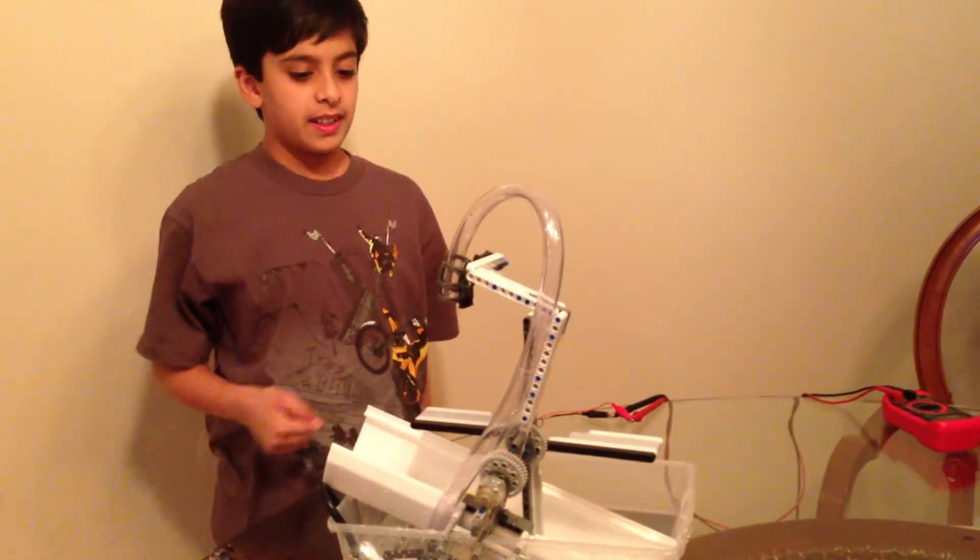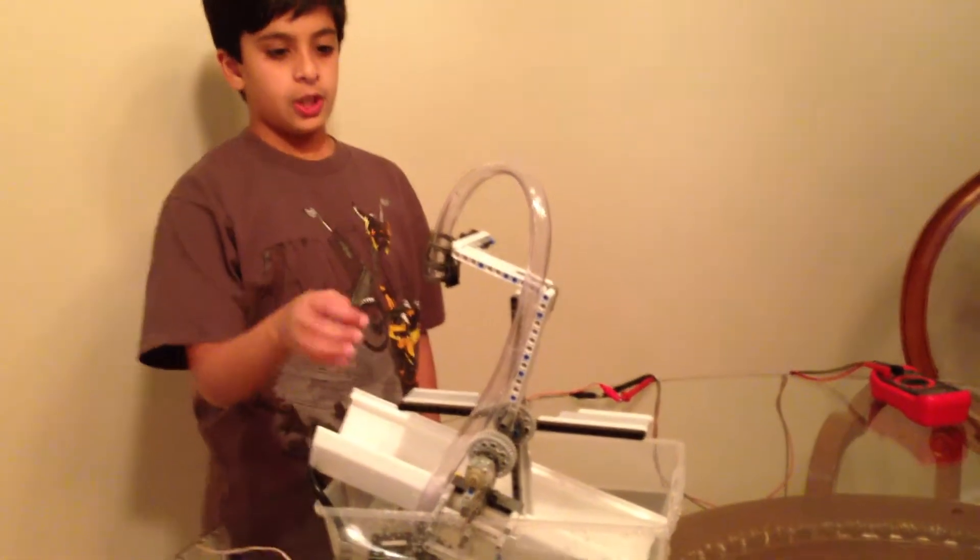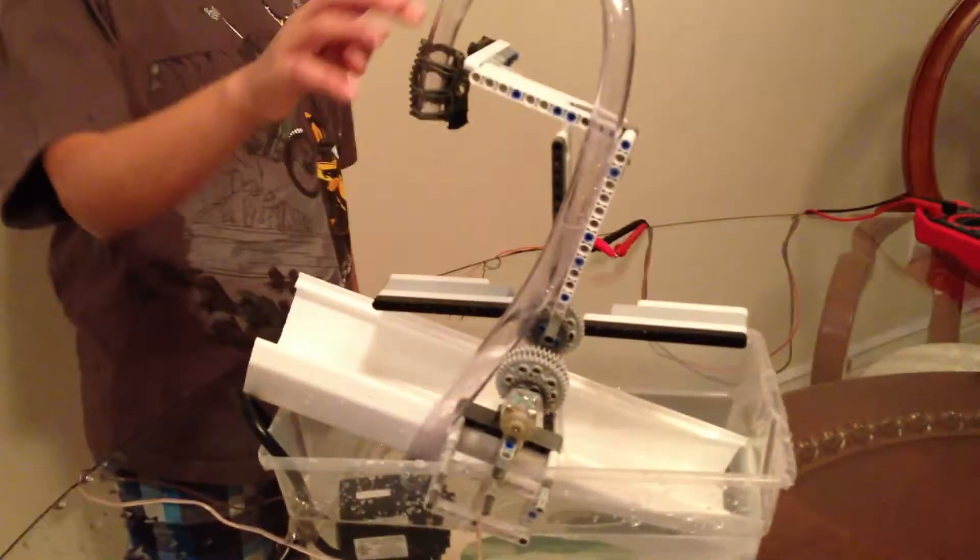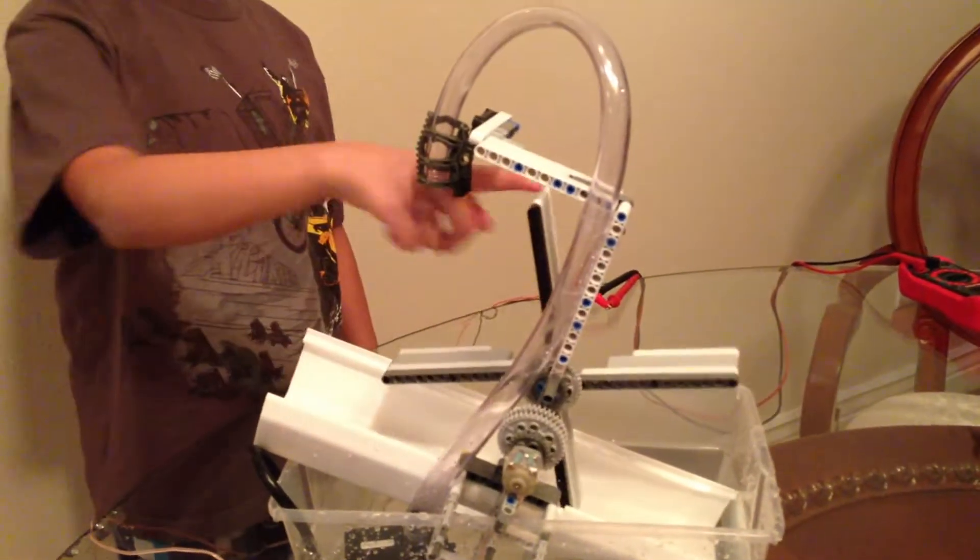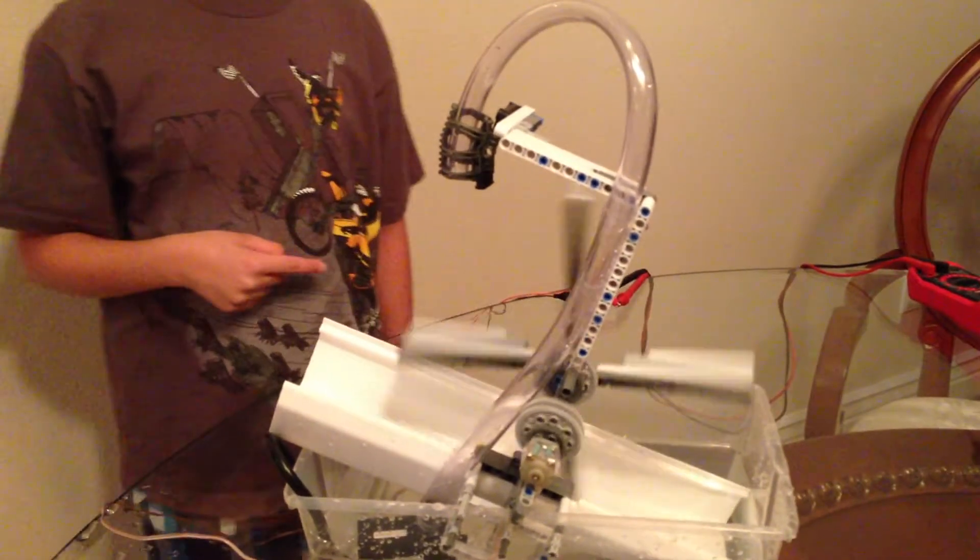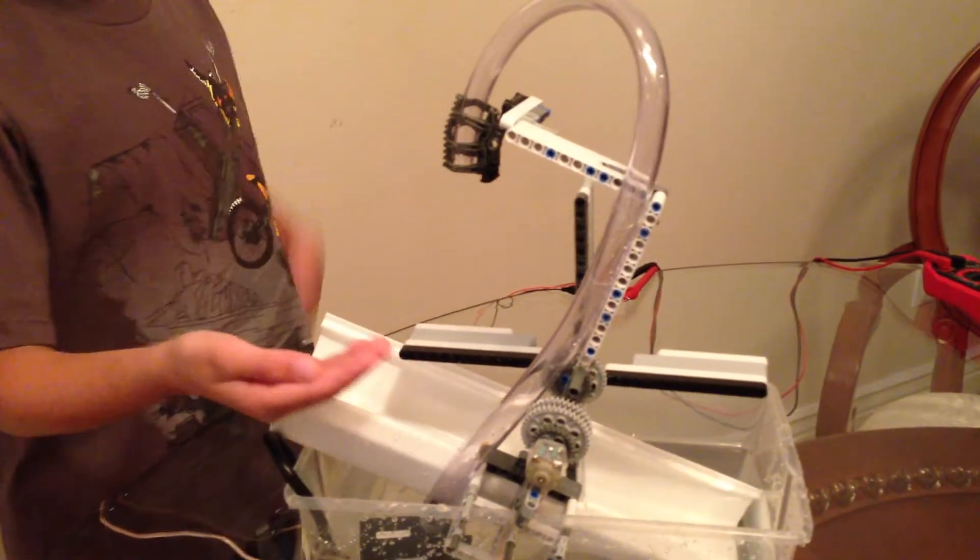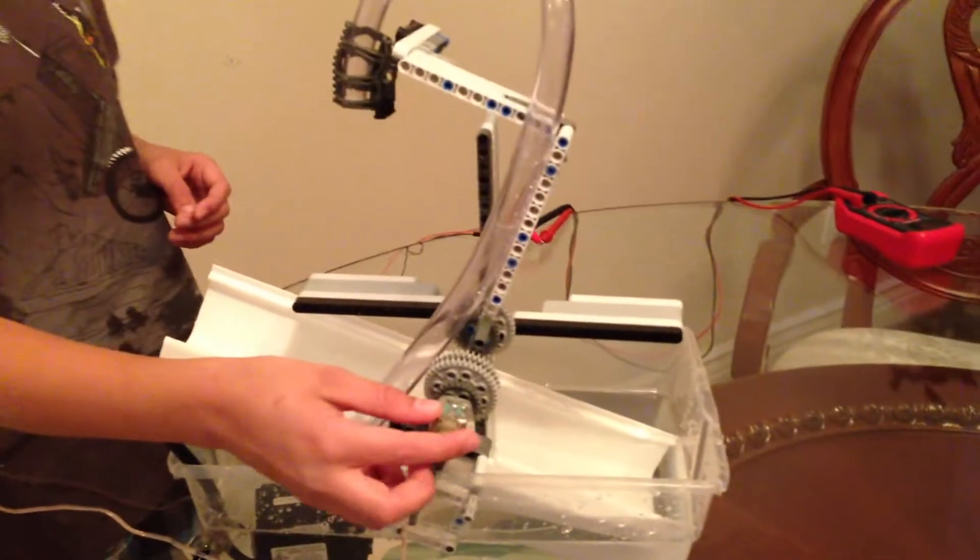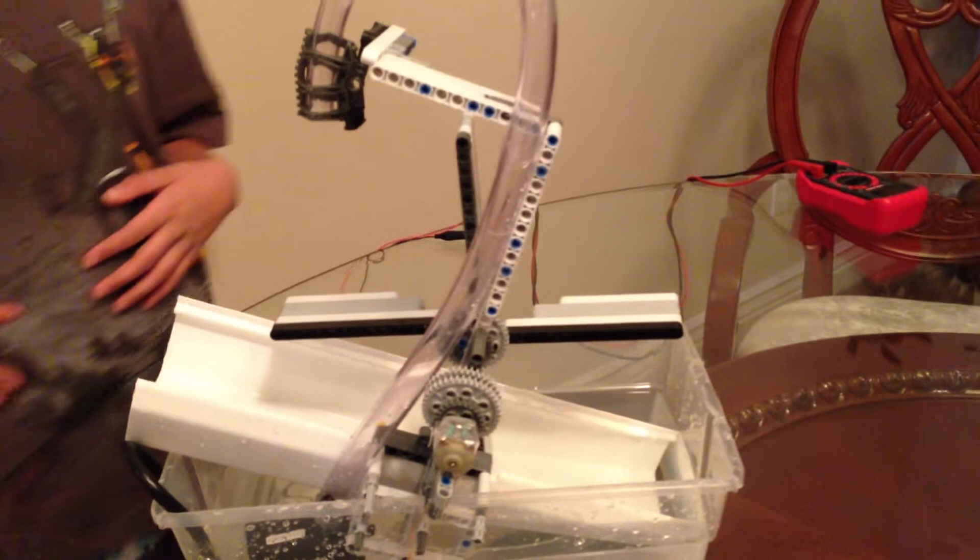This is my hydropower model. It shows how hydropower works. Water comes through this pipe and falls here, spinning this turbine. The turbine then spins this generator which generates electricity.